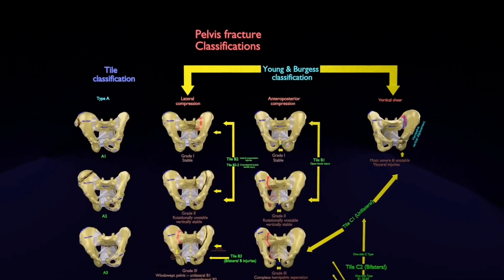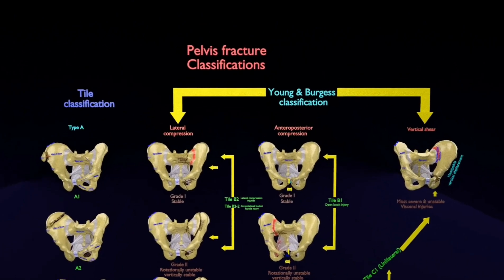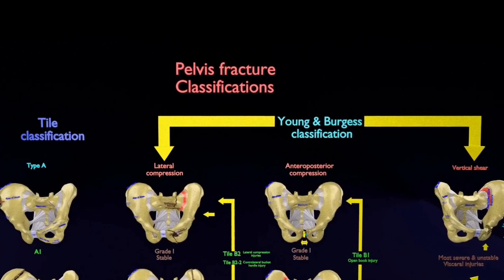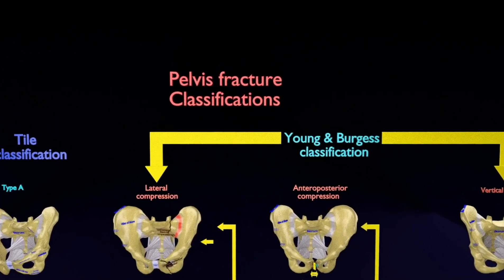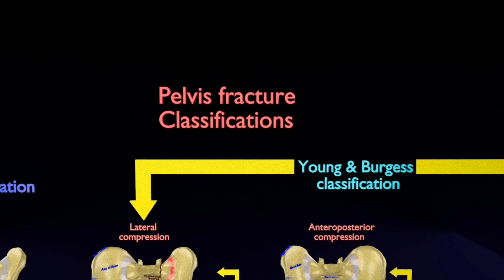They are divided into two types: stable and unstable. Unstable fractures are further divided into anterior-posterior compression, lateral compression, vertical shear, and combined mechanism fractures.